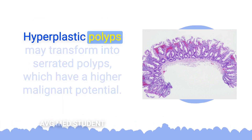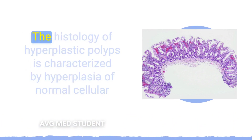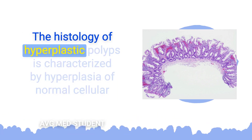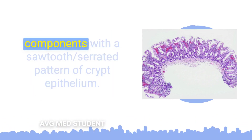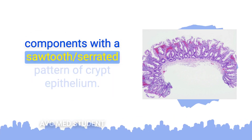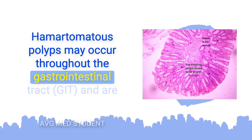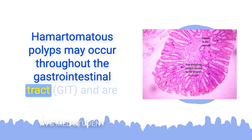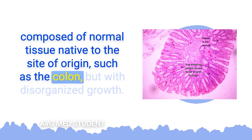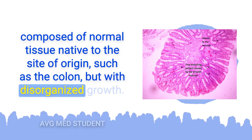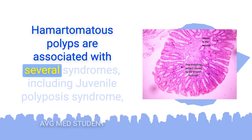Hyperplastic polyps may transform into serrated polyps, which have a higher malignant potential. The histology of hyperplastic polyps is characterized by hyperplasia of normal cellular components with a sawtooth, serrated pattern of crypt epithelium. Hamartomatous polyps may occur throughout the gastrointestinal tract and are composed of normal tissue native to the site of origin, such as the colon, but with disorganized growth.